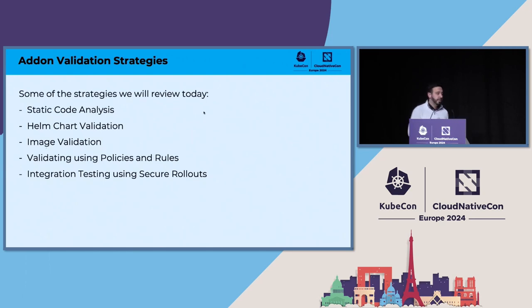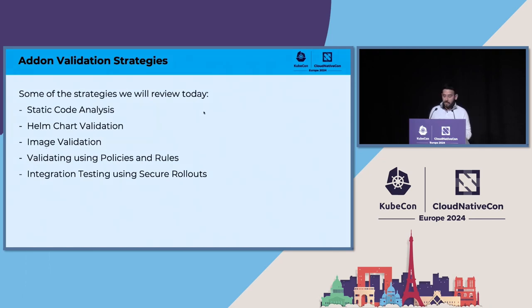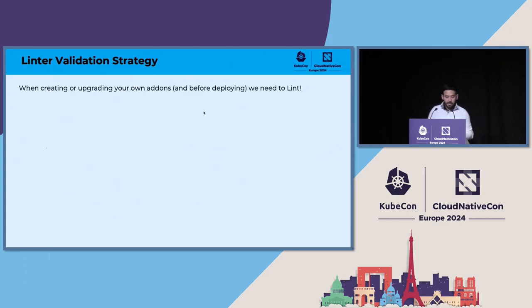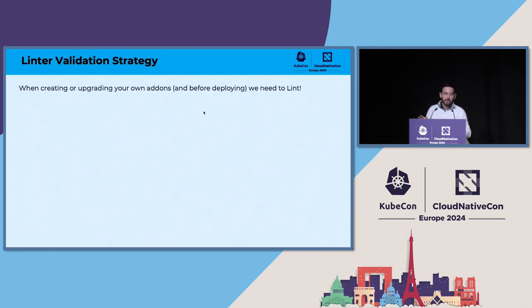The first strategy is static code analysis, also known as linter validation. Even before we deploy our add-ons into the cluster, we want to make sure they are correct — that's where linting helps. There are open source tools that can help you. One of them is KubeLinter, which is awesome. You can run this tool against a YAML, and it will tell you what's wrong with it, if anything.